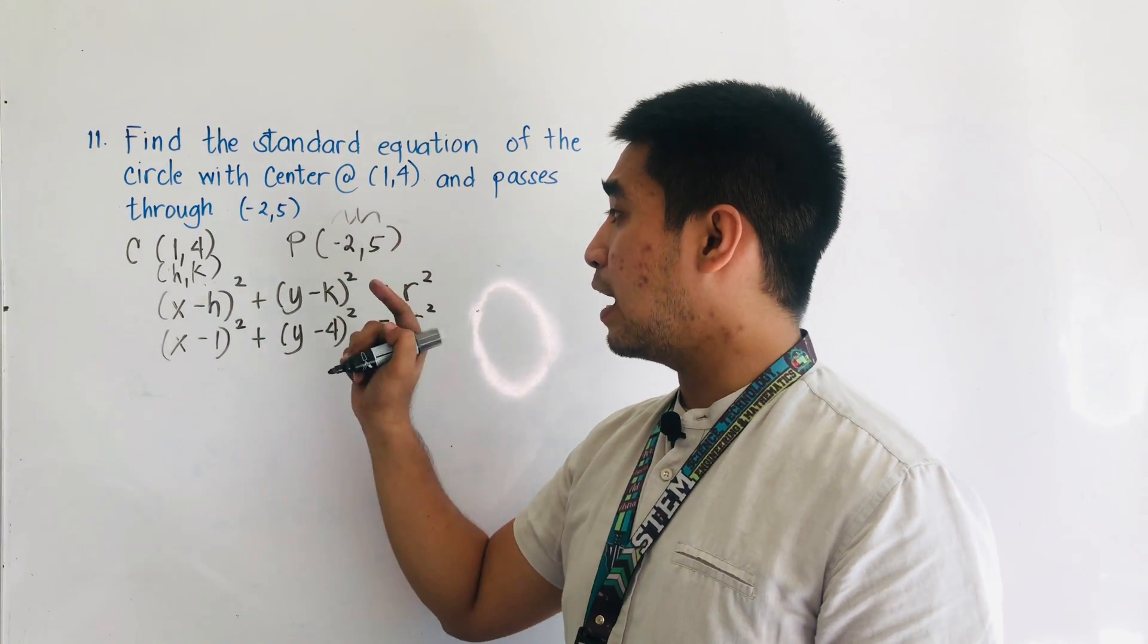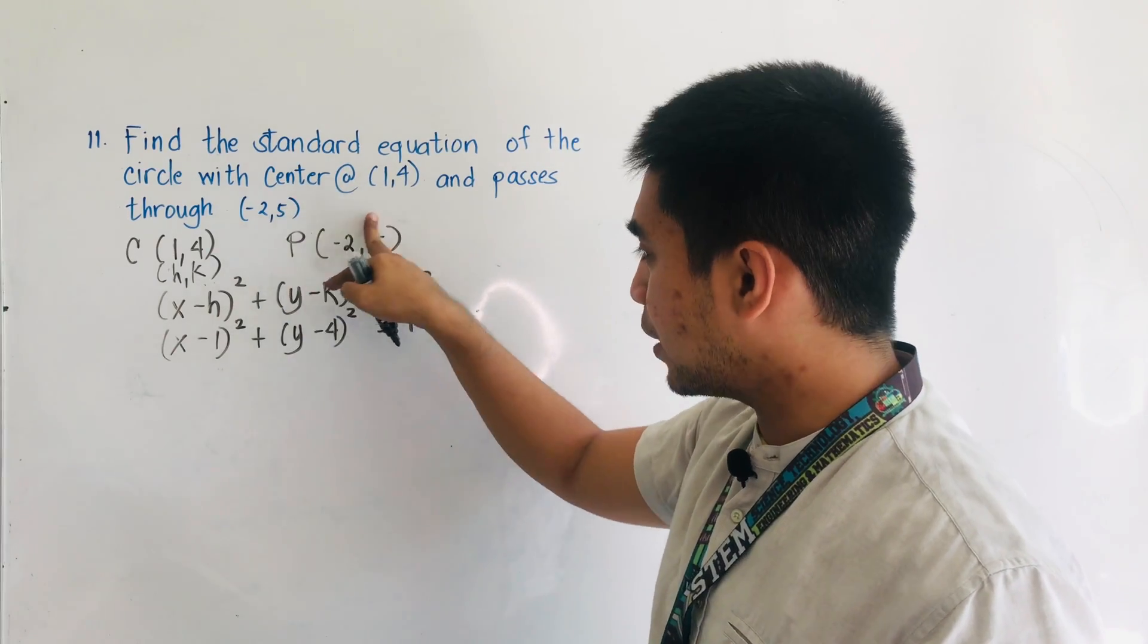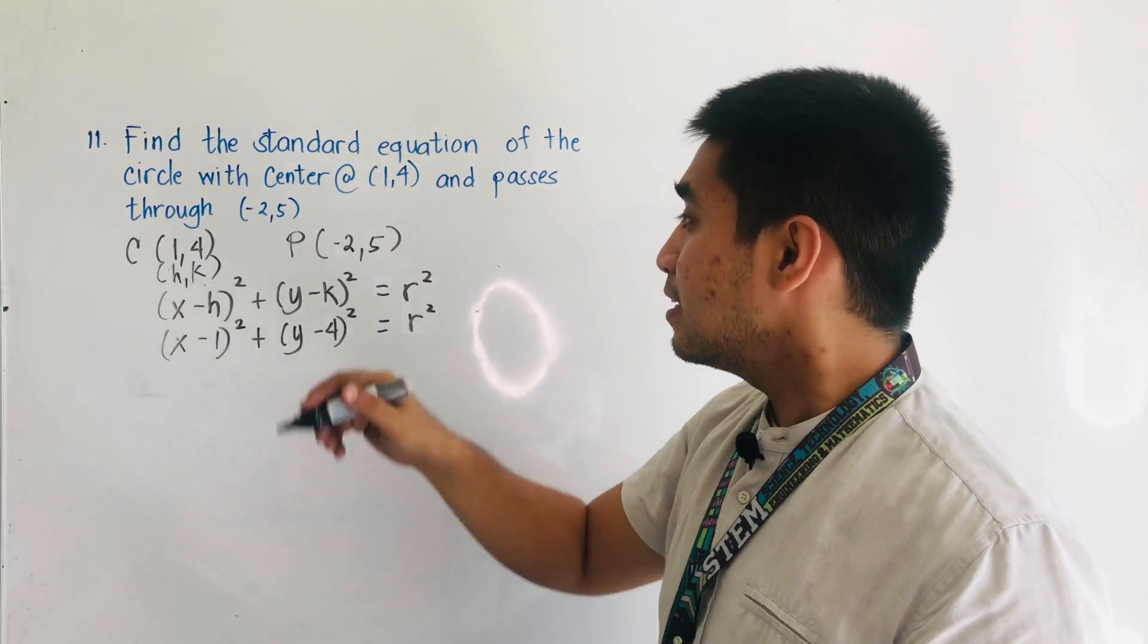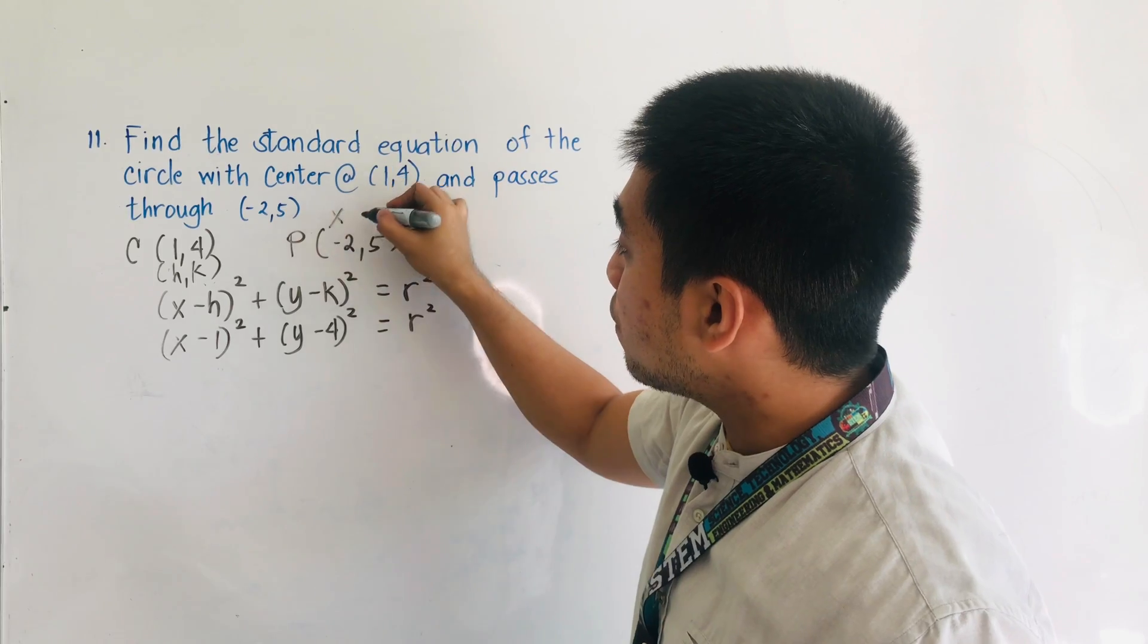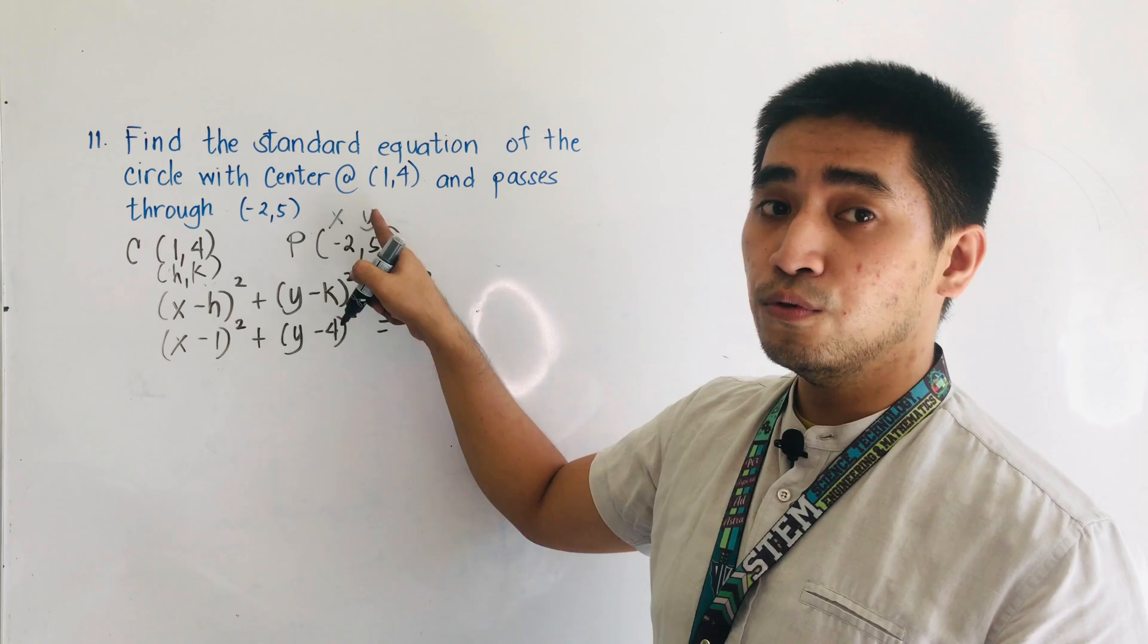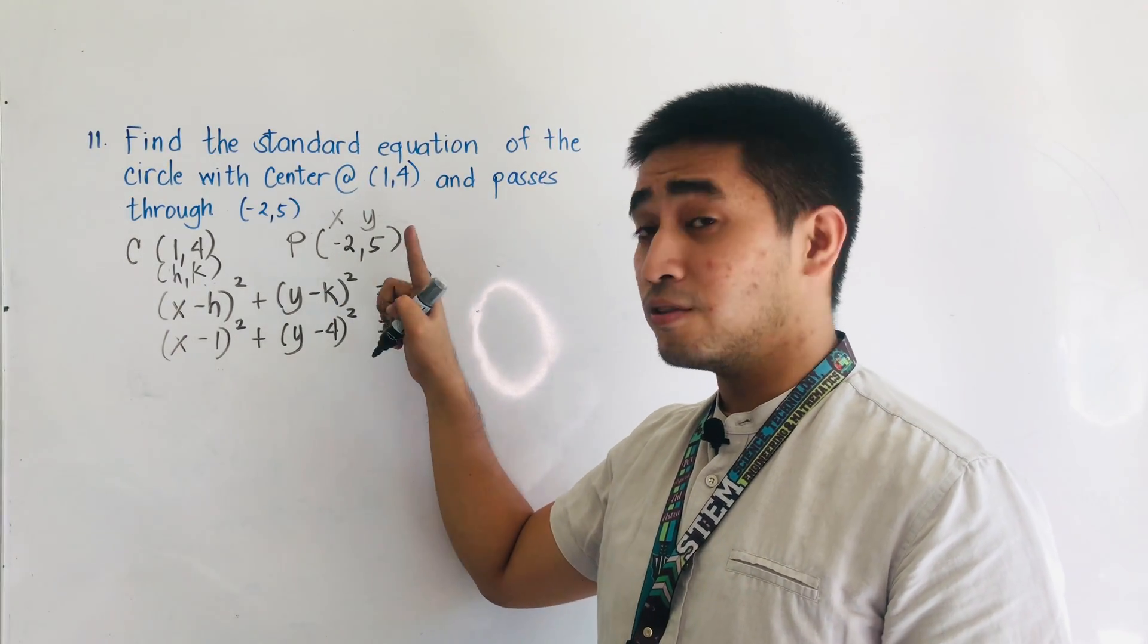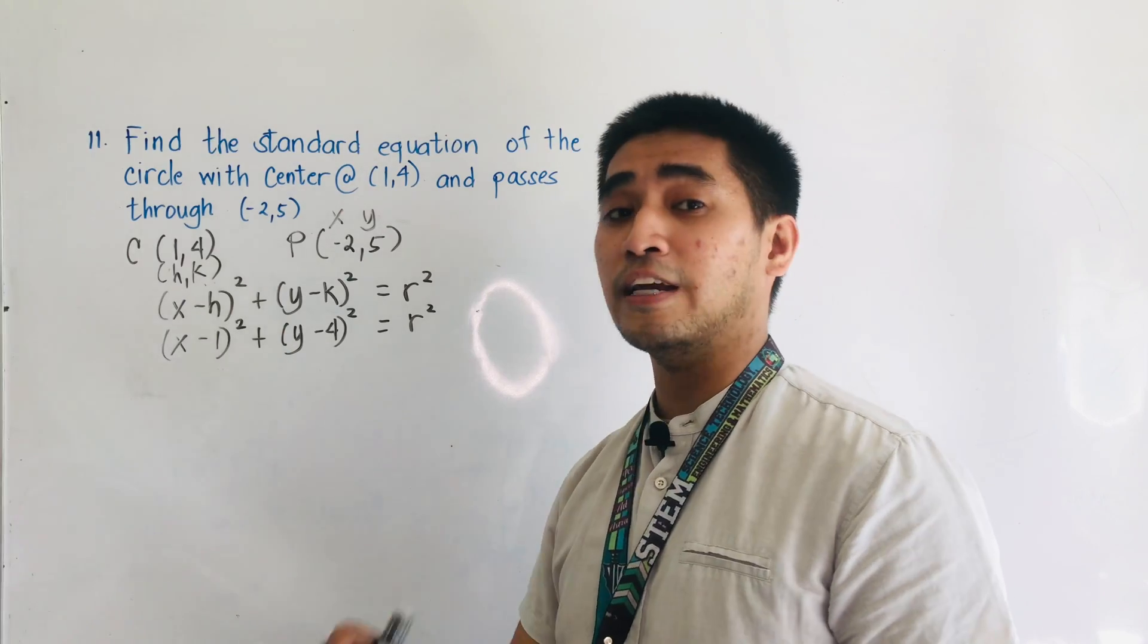And how do we solve now the radius using this point? Remember, if you are given a point on the circle, therefore, that is the value of x and y given the center radius form. x is equal to negative 2 and y is equal to positive 5. Let us now try to substitute this point P in the center radius form.